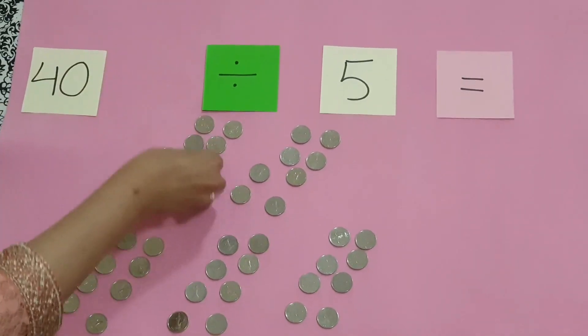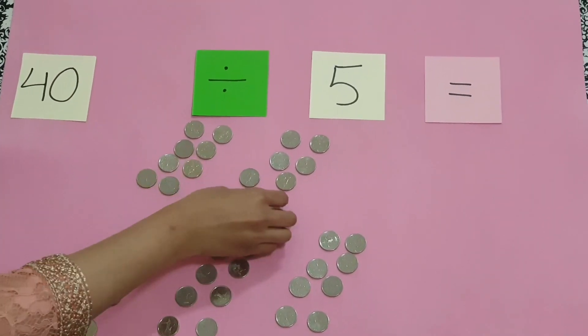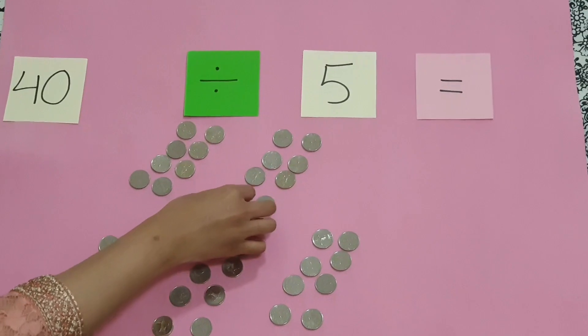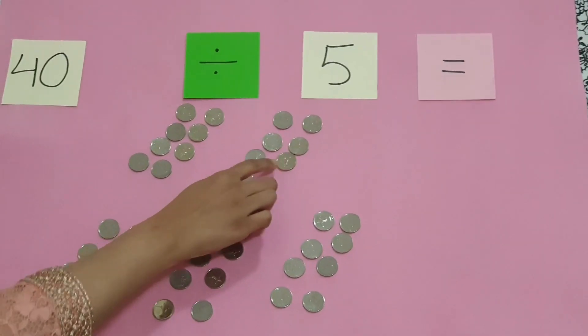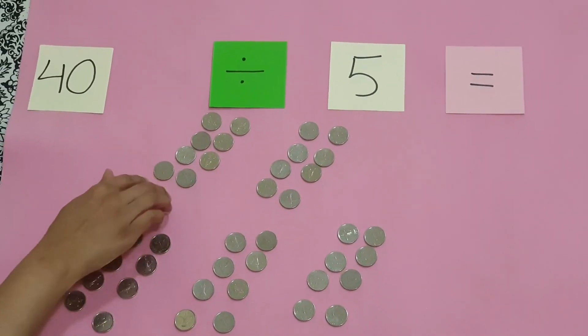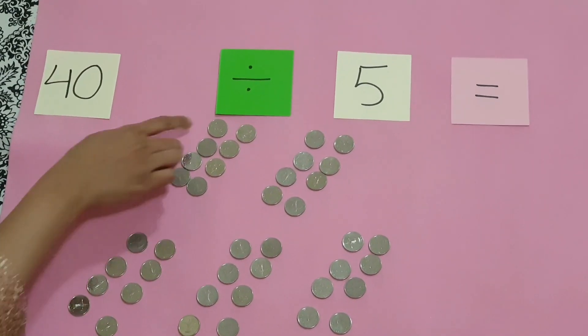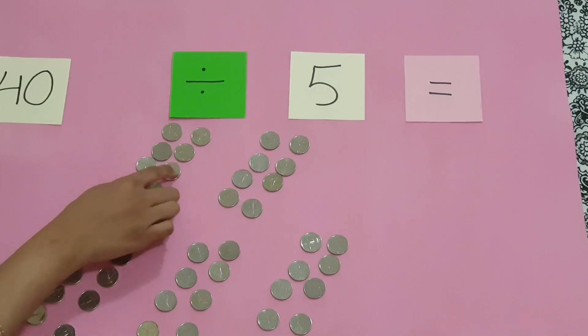Now let's see how many coins are there in one group - one, two, three, four, five, six, seven, eight. Let's check how many coins are there in another group - one, two, three, four, five, six, seven, eight.